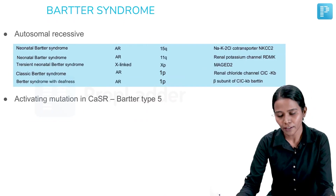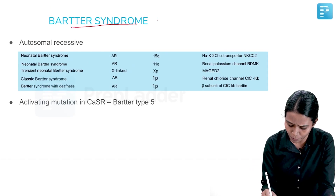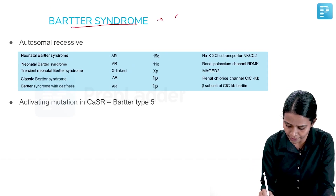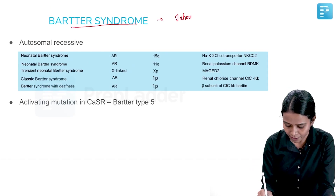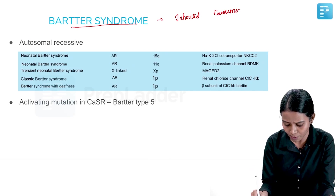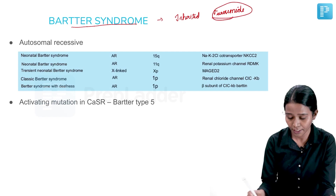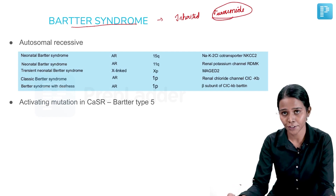Bartter syndrome is also called inherited furosemide. Whenever a question is about Bartter syndrome, think about the action of furosemide, which blocks the sodium-potassium-2-chloride transporter.